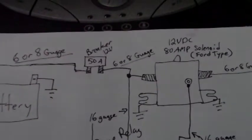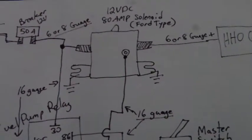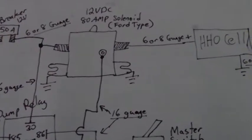We've got the battery. Use a 50 amp breaker, 80 amp solenoid like a Ford type solenoid. Fuel cell goes there. Grounded to the chassis of course.